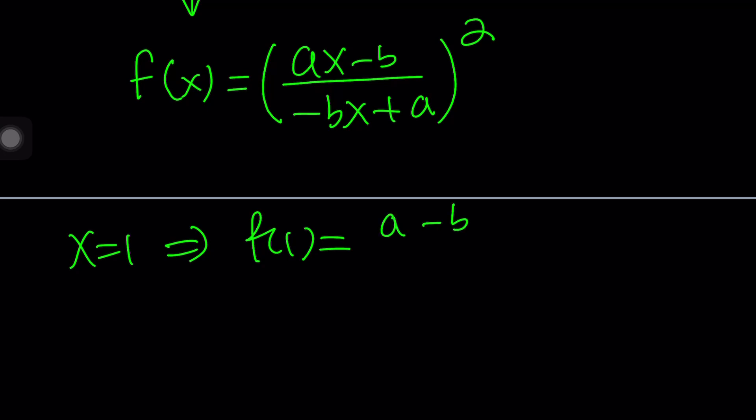It's going to be (a-b)/(-b+a), and then the whole thing is squared. But notice that the numerator and denominator are the same, just written differently. So it's going to be 1, and 1 squared is 1. In other words, f of 1 is going to be 1 in this equation.